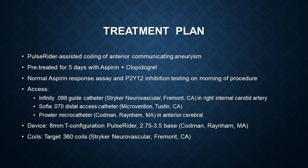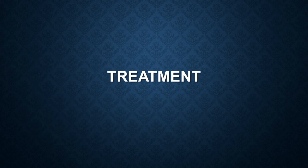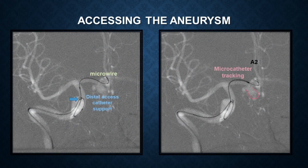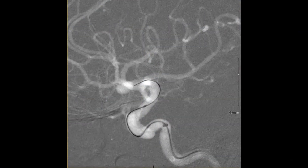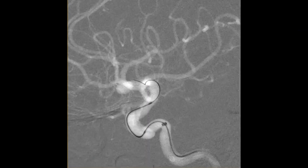The access system included an infinity guide catheter, a distal access catheter, and a Prowler Select Plus 021 microcatheter. Based on her measurements, an 8 millimeter T-shaped Pulse Rider was chosen. The A2 was accessed with a microwire to allow deployment of the device at the level of the ACOM. To enhance trackability and support for the microcatheter, the distal access catheter was positioned in the cavernous ICA.